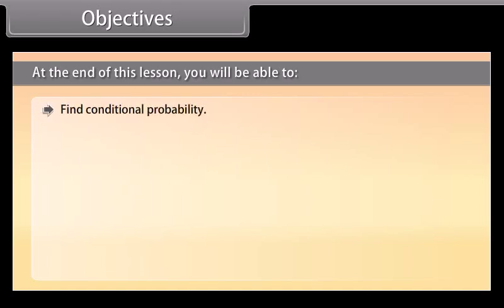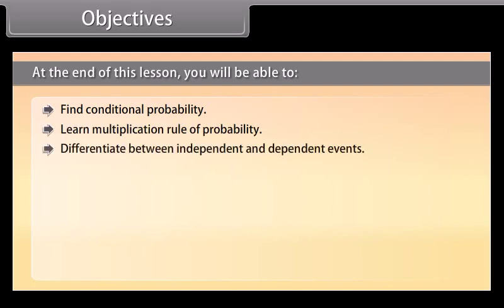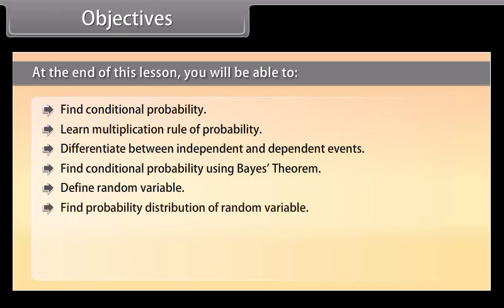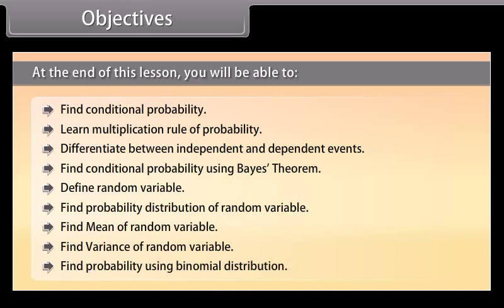You will also learn to differentiate between independent and dependent events, find conditional probability using Bayes' theorem, define random variable, find probability distribution of a random variable, find mean of a random variable, find variance of a random variable, and find probability using binomial distribution.